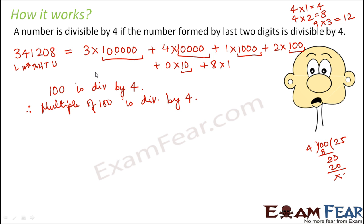You will see that this term is divisible by 4, because this term is basically a multiple of 100. This term is also divisible by 4. This term contains 1000, so it is also divisible by 4. This has 100, so this is also divisible by 4.